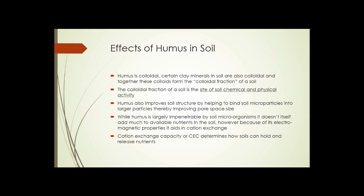Humus also improves soil structure by helping to bind soil micro-particles into larger particles, thereby improving soil pore space size — making larger pores that are easier for plants to extract water from — and allows for easier gas exchange with the atmosphere. While humus is largely impenetrable by soil microorganisms, it doesn't in itself add much to the available nutrients in the soil.